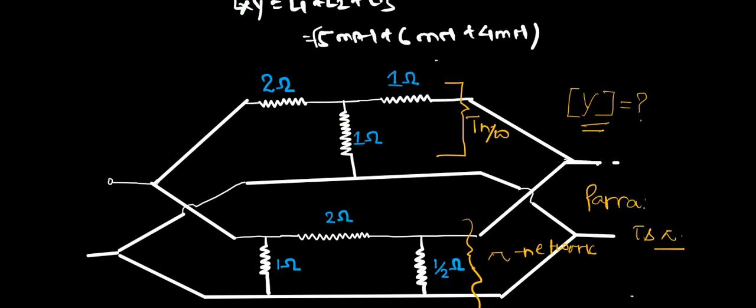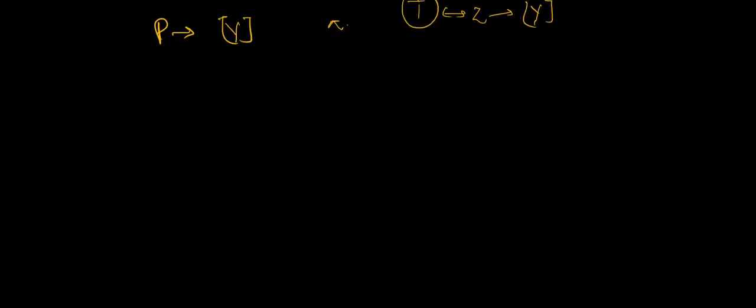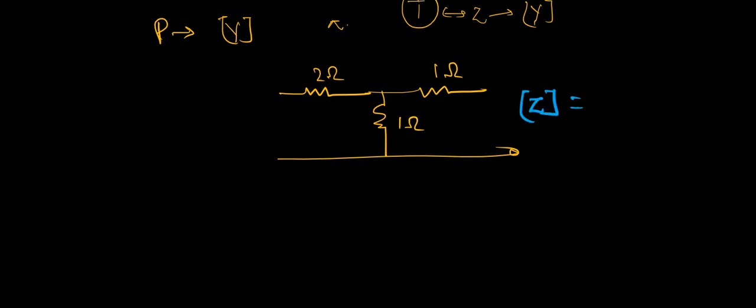Taking the first T network into consideration, the prime elements are 2 ohm, 1 ohm, and 1 ohm. I have already discussed how to calculate the Z parameter of this T network. So Z11 equals the sum of this, that is 3. Z12 will be 1. Z21 will be 1, and Z22 will be the sum of this, that's 2.